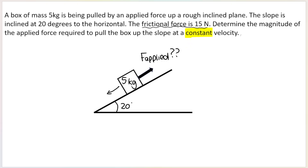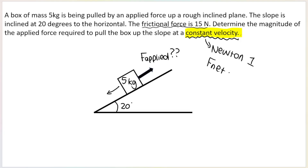The key word in this question is constant velocity. In a previous video I told you that if you see the words constant velocity, uniform velocity, the object is stationary, in equilibrium, or not accelerating — all of those keywords point to Newton's first law of motion, Newton 1, where F net is equal to zero. That's very, very important.